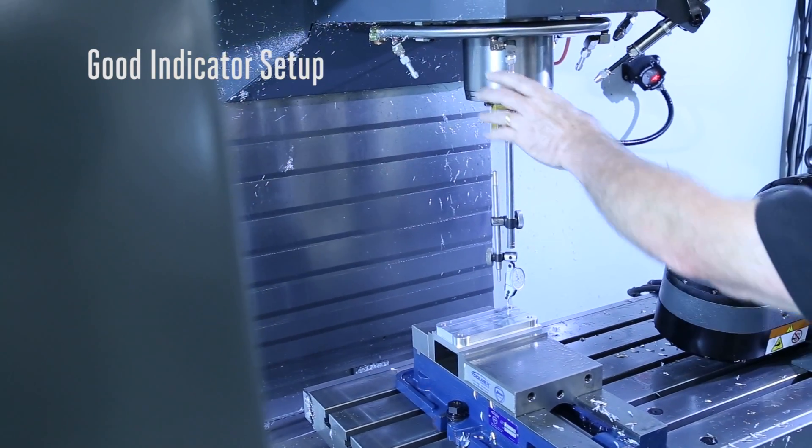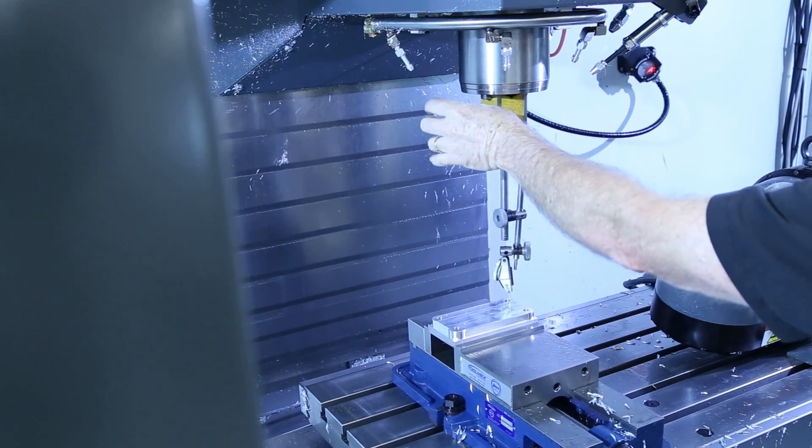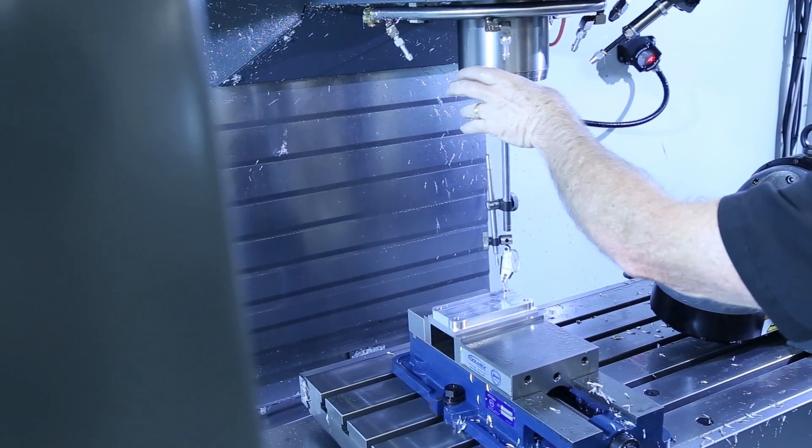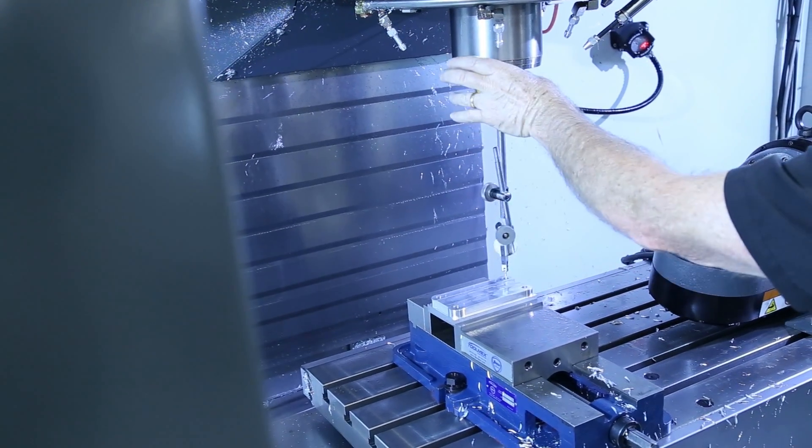When you're setting up a job, there'll be times when you need to pick up a bore or a boss with an indicator. In a vertical machining center, gravity is always acting on the indicator in the same direction, so it doesn't affect your measurement.